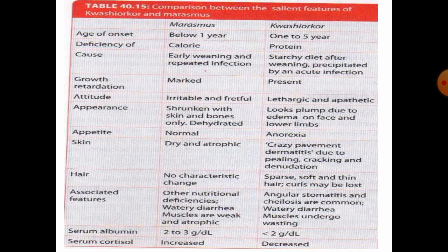Moving on to important exam questions: you may be asked to define Protein Energy Malnutrition and mention its causes, or to describe Kwashiorkor and Marasmus. Another important question is the difference between Kwashiorkor and Marasmus. You need to know the comparison between the salient features of Kwashiorkor and Marasmus.